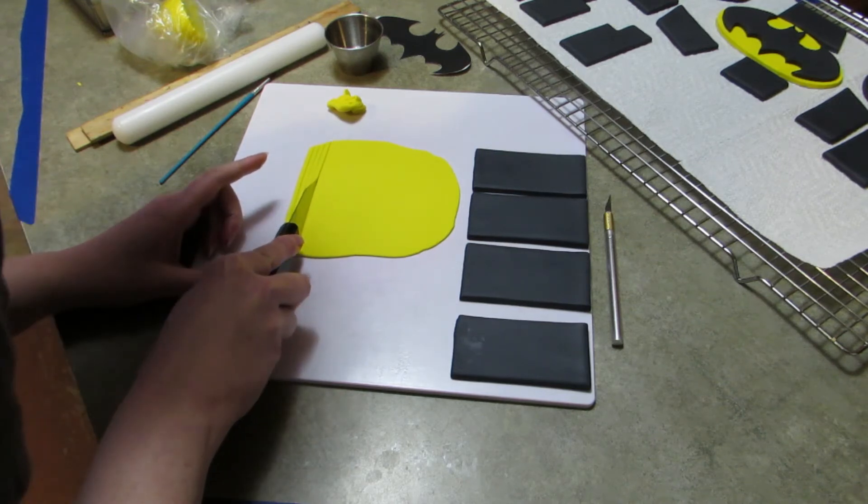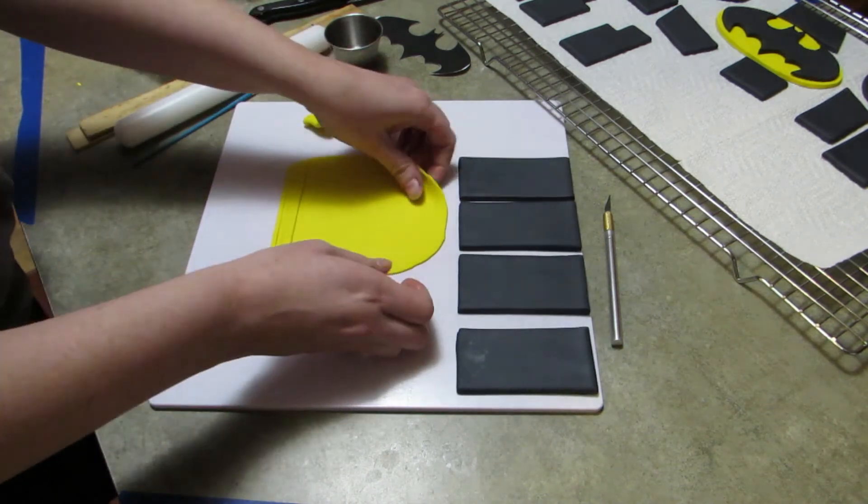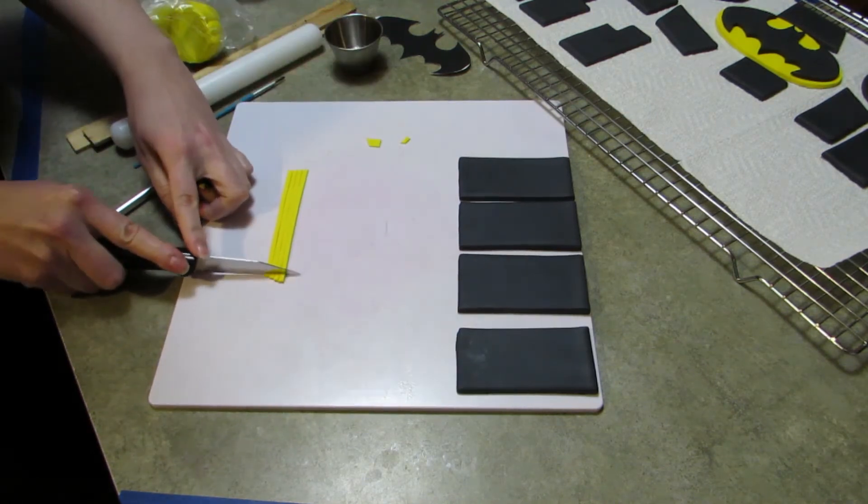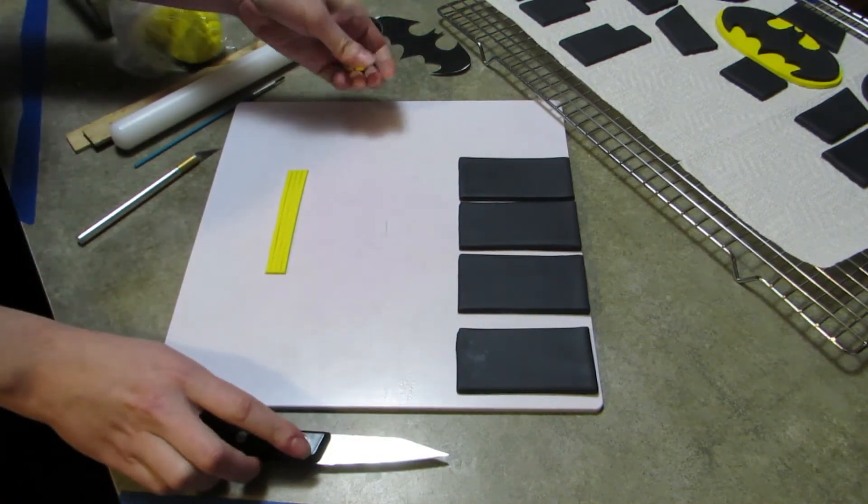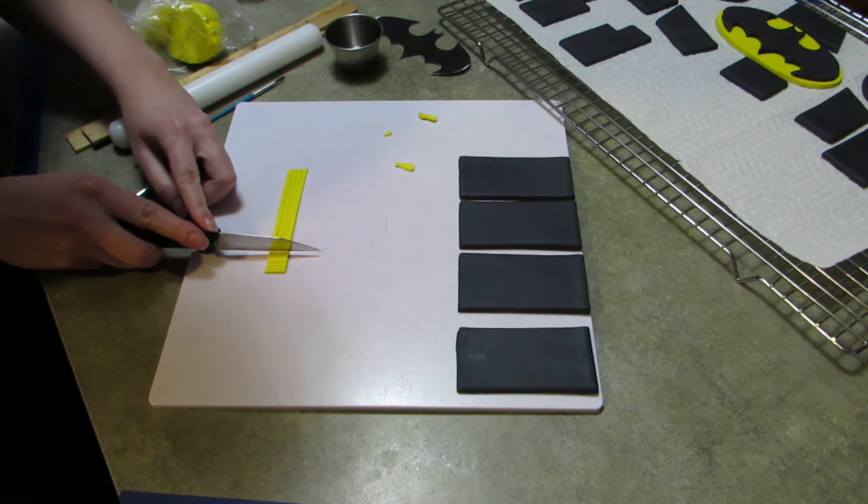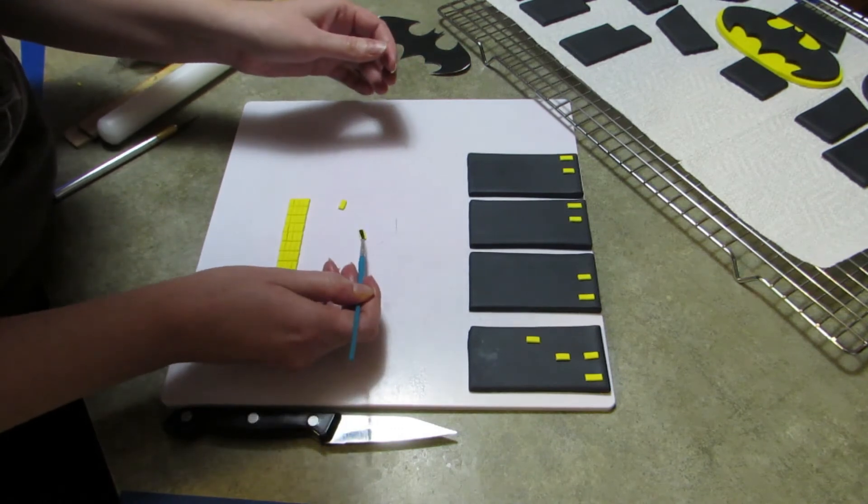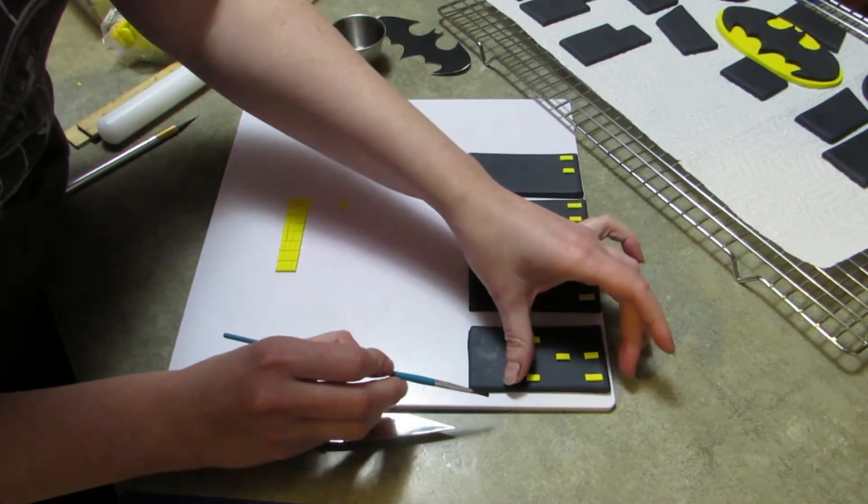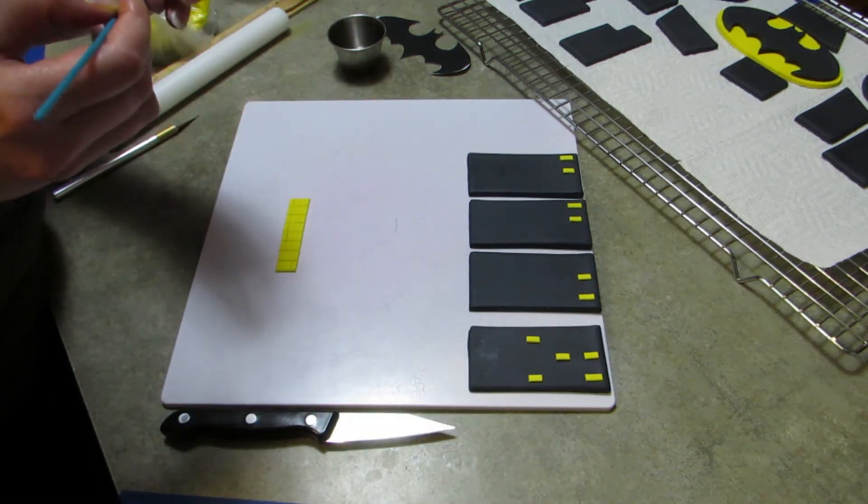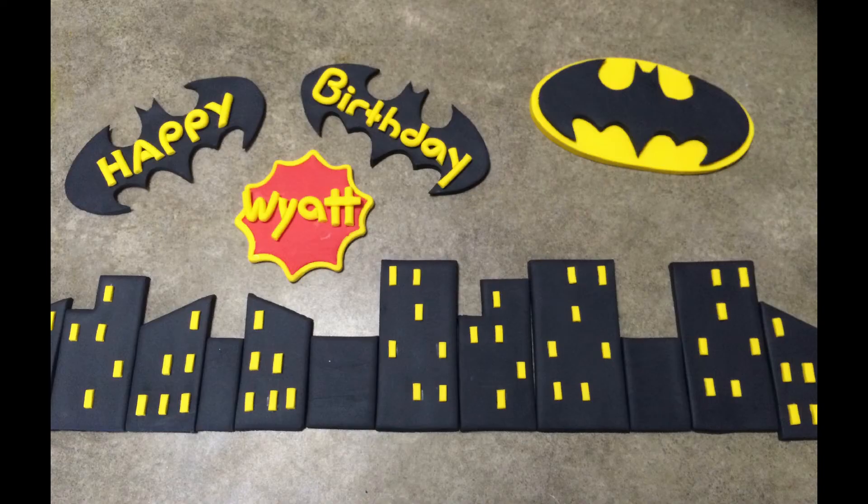Don't forget to smooth it. To add the windows to the buildings, all you do is roll out your yellow really thin - you want it really thin. Cut long thin stripes and then cross cut it to make little rectangles. You want them as close to the same size as possible. Once you get your little rectangles, I just use water to connect my gum paste pieces together with a paintbrush. Just take a little bit of water on the paintbrush - get it wet but don't make it drippy.